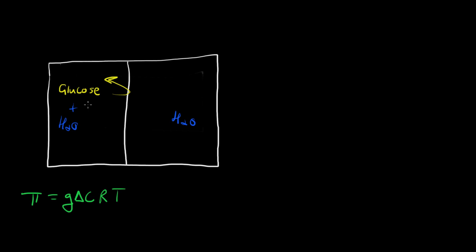Because glucose cannot permeate through the membrane, we have water flowing through to the other side. This osmotic pressure is pulling water through. How would we measure this?